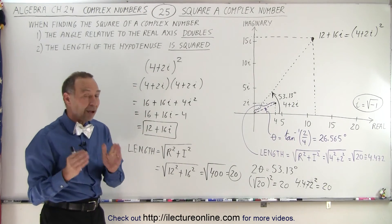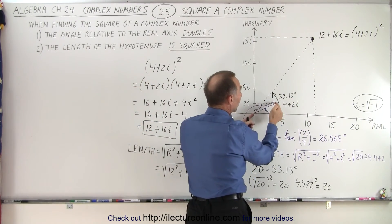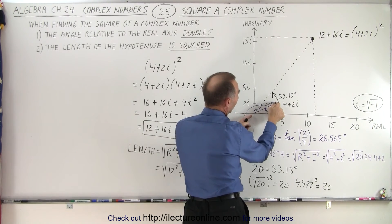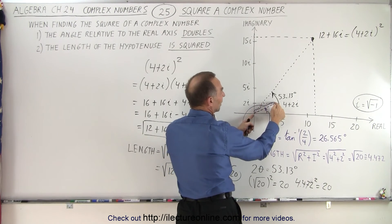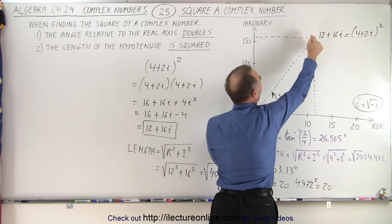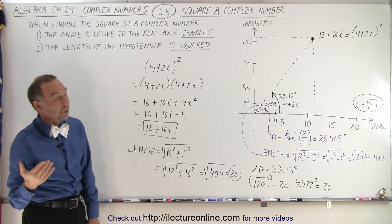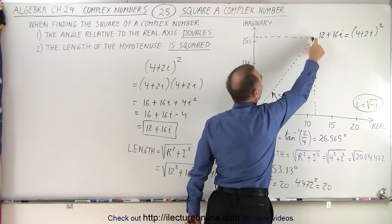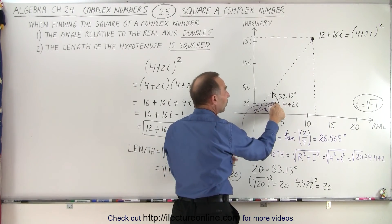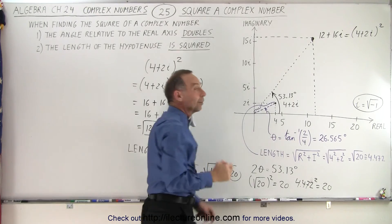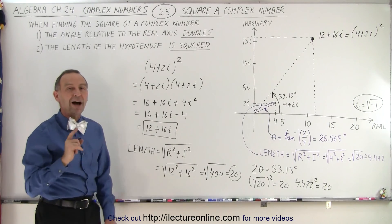So that's the interesting result: when we take a complex number, find it on the real-imaginary plane, and then square it, the angle of the line connecting that point to the origin is doubled, and the length from the origin to the point is squared — and that puts us at the result, the square of the original complex number. This also means that if we take this number and take the square root, the angle would be half as big and the distance from the origin would be the square root of the original length. We're going to use that in the next video to figure out what the square root of i is equal to.